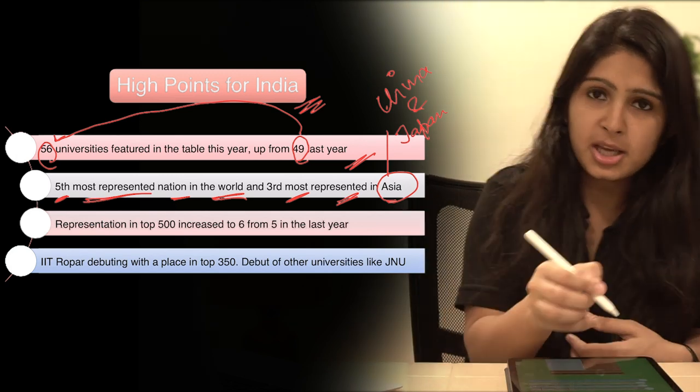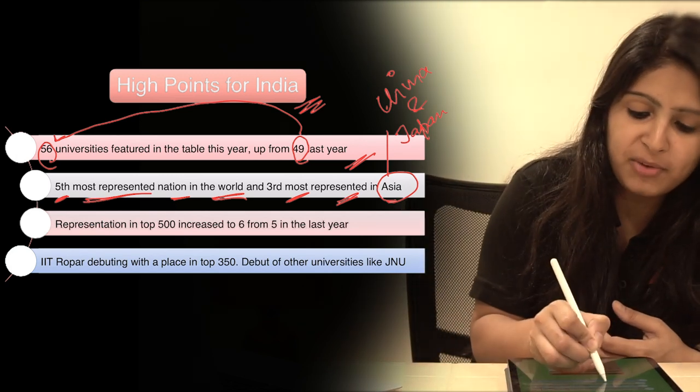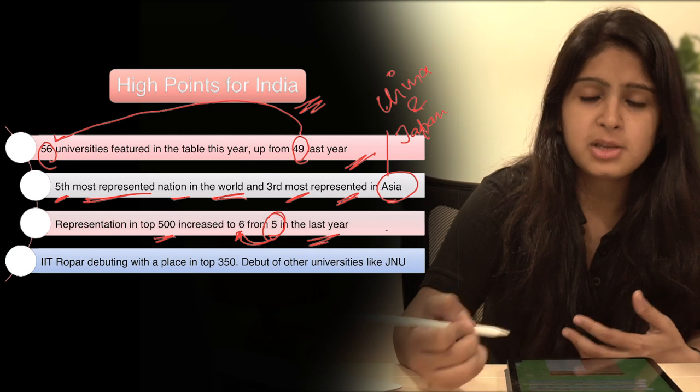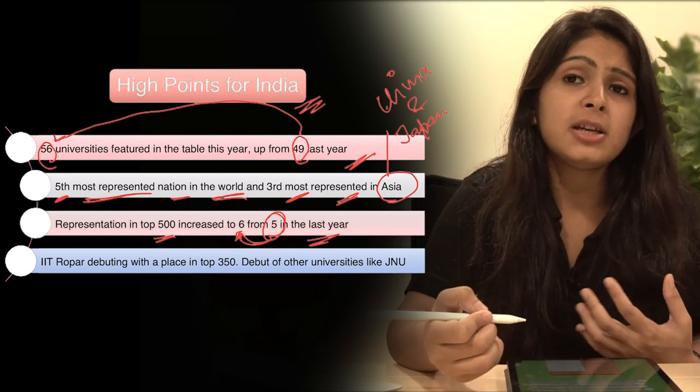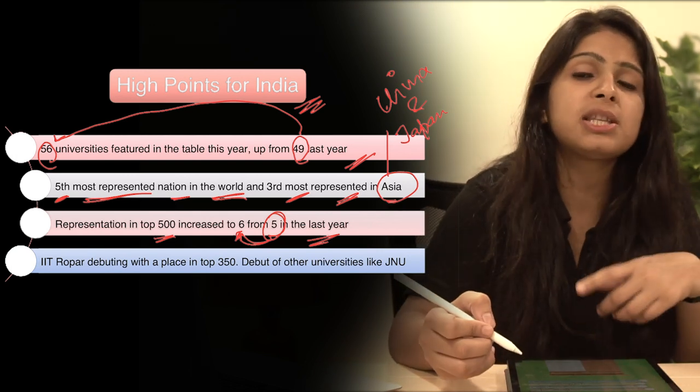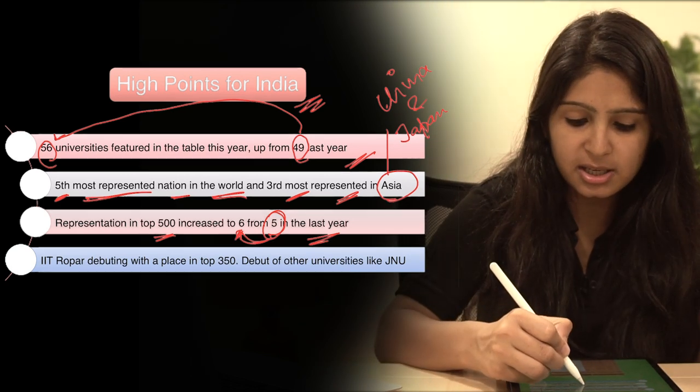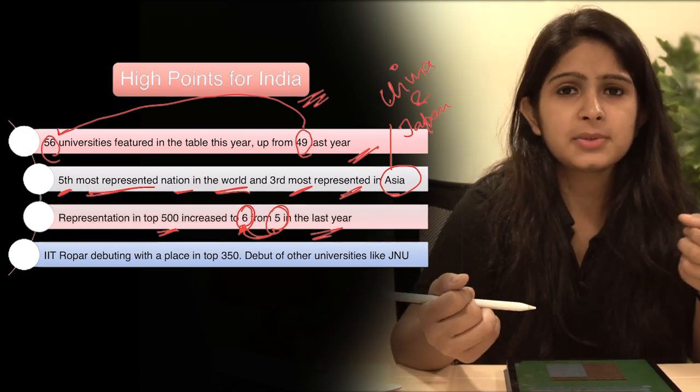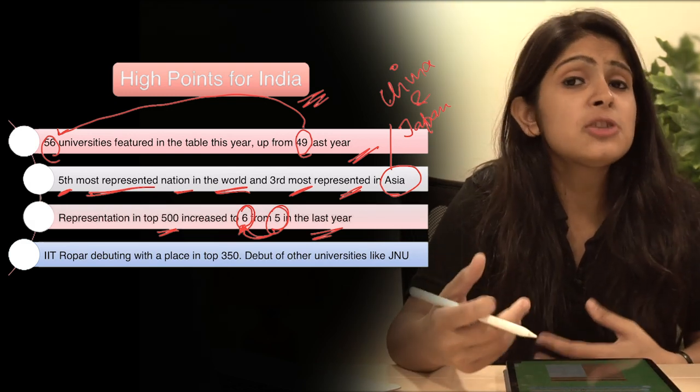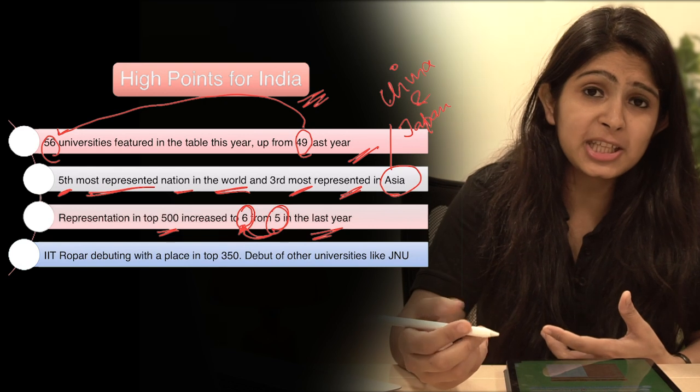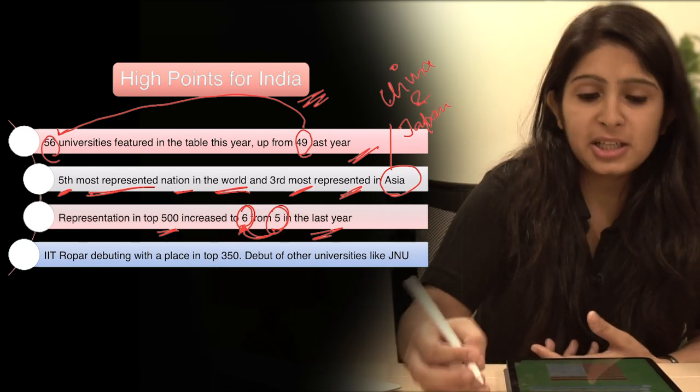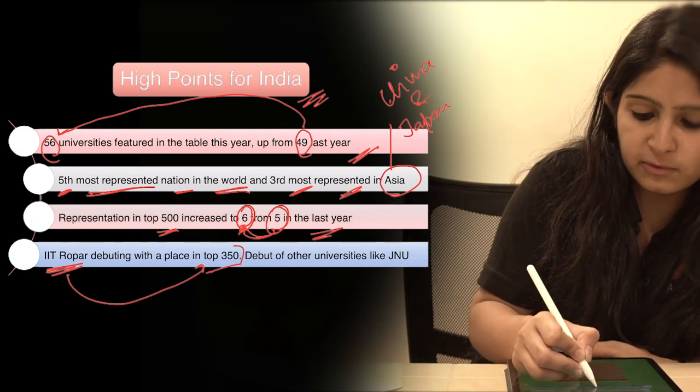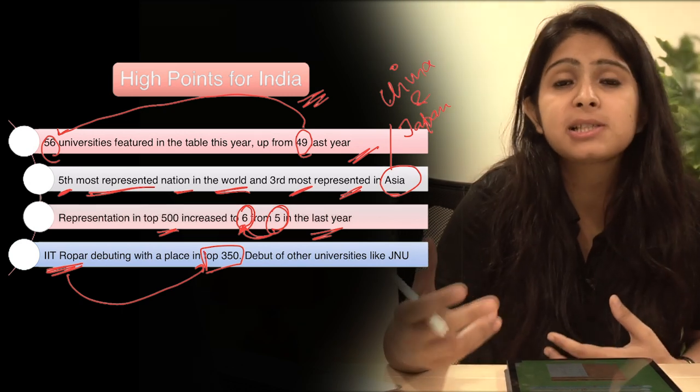Now let's move on to the next point which is representation in top 500 increased to 6 from 5 in the last year. So last year top 500 mein India ki 5 universities thi and now this number has increased by 1 to 6. So is saal top 500 mein India ki 6 universities ka naam aya hai. And last but not the least, IIT Ropar ka naam is list mein pahli baar aya hai.